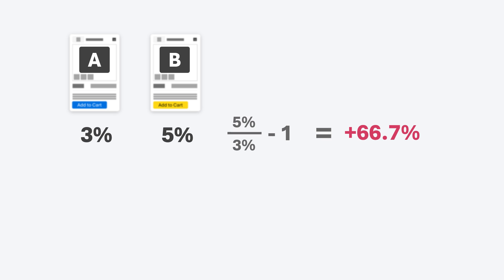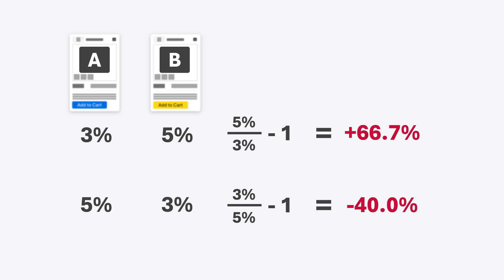One common question on percentage change is number order. In our example we have a 66.7% change, but what if we reversed it — page A converting at 5% and page B at 3%? The formula becomes 3 over 5 minus 1, which gives a negative number — but the result is not negative 66.7. Instead, it's negative 40%, because our basis or denominator is different. We can now say page B is performing 40% worse — a 40% reduction compared to page A. The order of numbers matters depending on the story you want to tell.